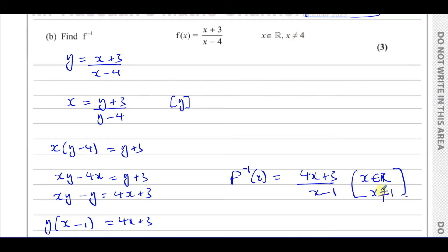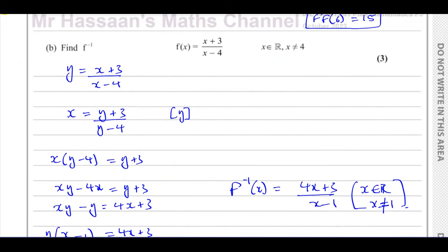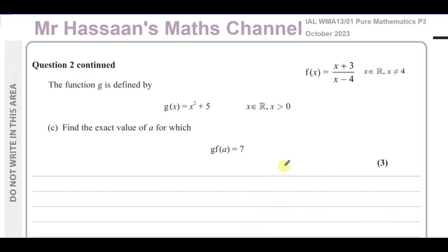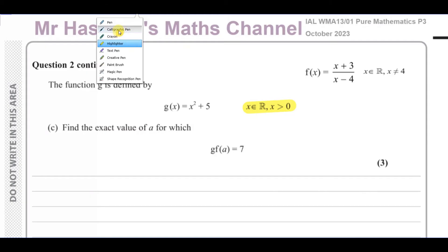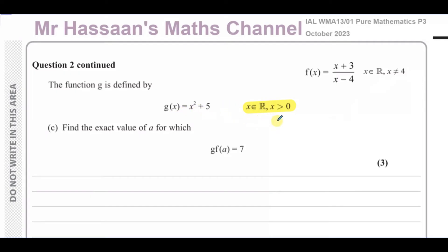Now for part c: a function g is defined by g(x) = x² + 5, where x is an element of the real numbers and x > 0. This domain restriction is not there for decoration — it definitely affects our answer. The function g only accepts positive inputs; x cannot be zero or negative.